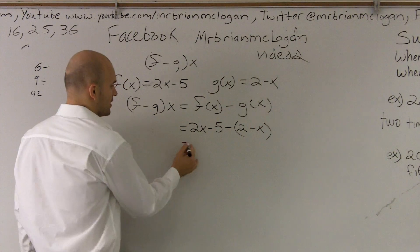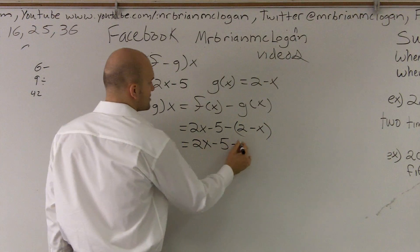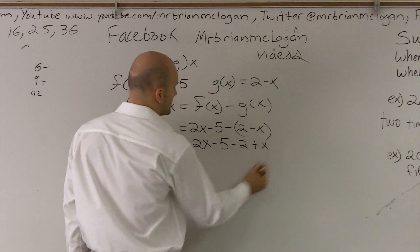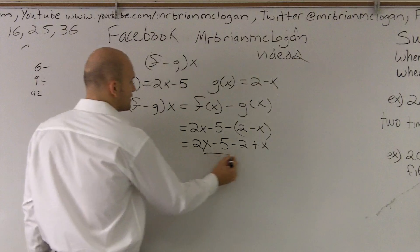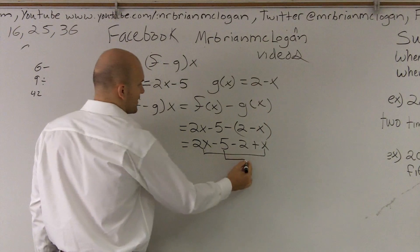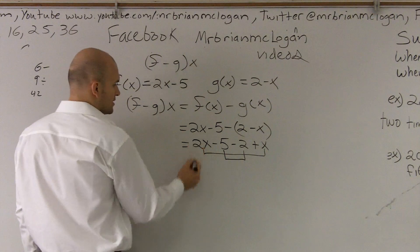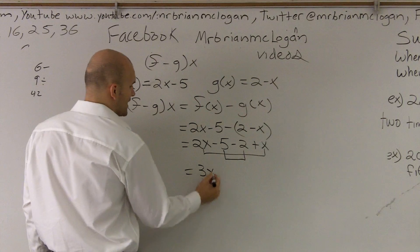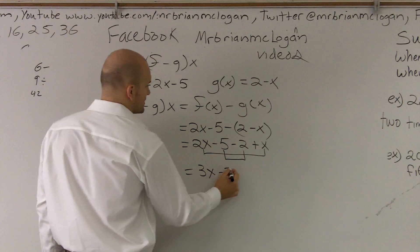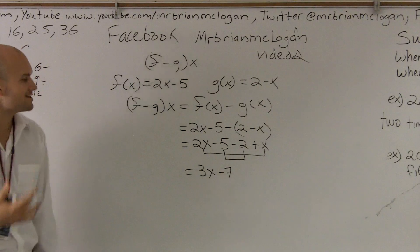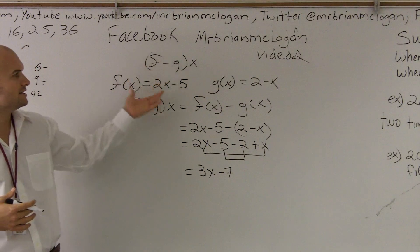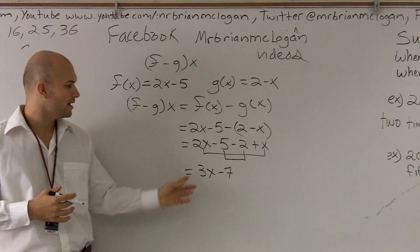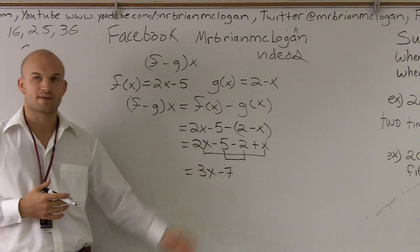I need to distribute that negative sign, so it becomes negative 2 plus x. Then I can combine my like terms: 2x and x, and negative 5 and negative 2. This becomes 3x, and negative 5 minus 2 becomes negative 7. Therefore, when you subtract these two functions, you obtain 3x minus 7.